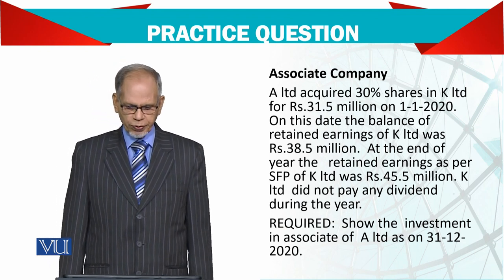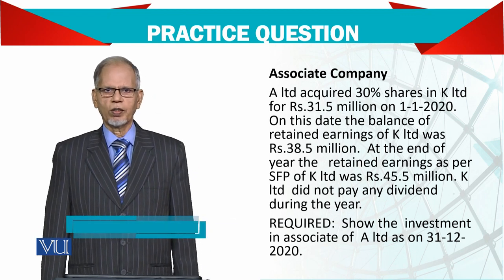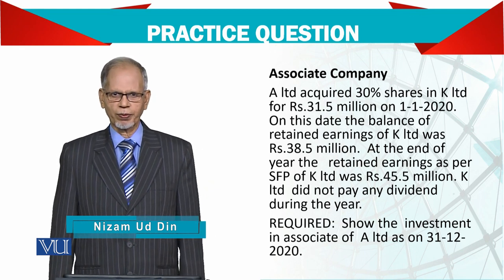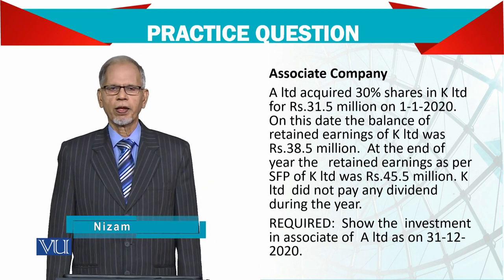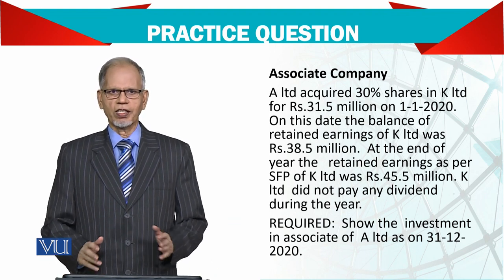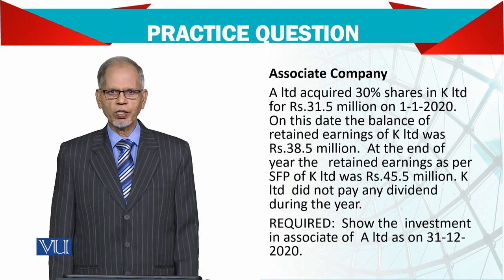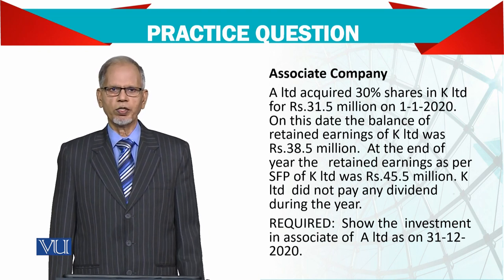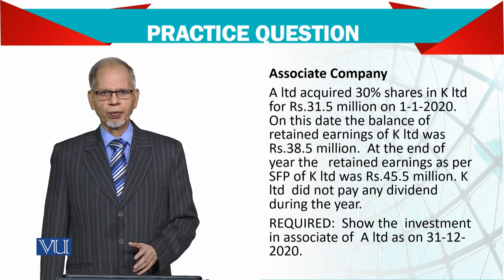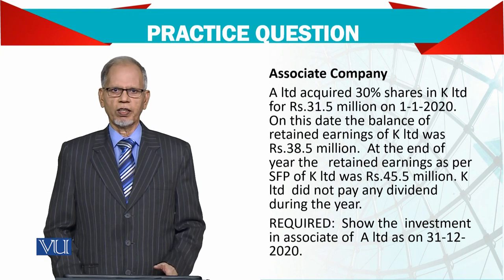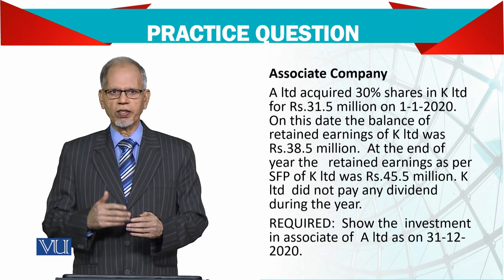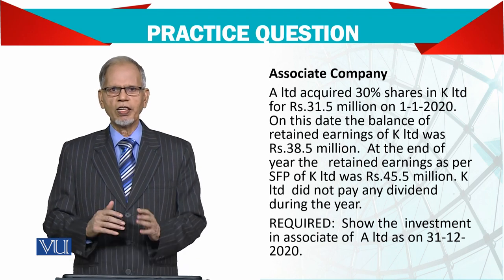The associated company is basically where a holding company has 20% to 50% shareholding. In that case, you are not supposed to add all assets, liabilities, sales and expenses of the associate into the group accounts. We use the equity method, and in the equity method, we simply take the group's share of profits before tax and the related tax portion.